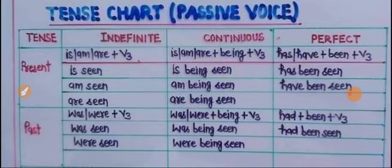Past tenses in passive voice: Past indefinite/simple past میں was/were کے ساتھ past participle ہوگی۔ Past continuous میں was/were کے ساتھ being ہوگا — was being seen / were being seen۔ Past perfect میں had been ہوگا — had been seen۔ Future continuous tense کی طرح past continuous tense بھی passive voice میں نہیں بدلتا۔